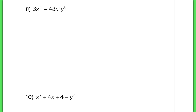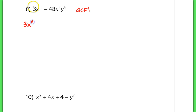Now in number 8, the best way to do this problem is to first take out a GCF — you must always take out a GCF here. If I take out the GCF, that would be 3x cubed, because both of these terms have at least a 3 and an x cubed in them.